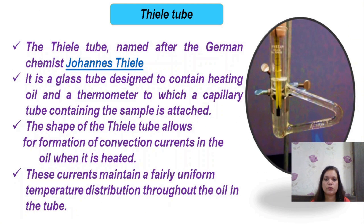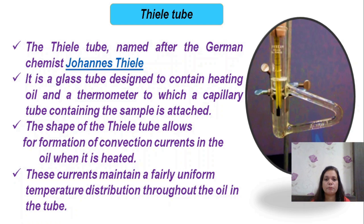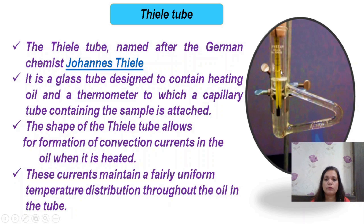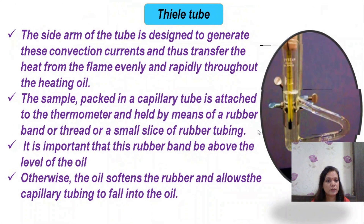This is the Thiele tube, named after the German chemist Jonathan Thiele. The triangular part of the Thiele tube is specially designed for heating; the tube contains paraffin oil, which has a very high boiling point. When you apply temperature through this triangular part, the formation of convection currents in the oil bath gives a fairly uniform temperature to the oil bath, so that we can determine the exact melting point temperature of the given substance.